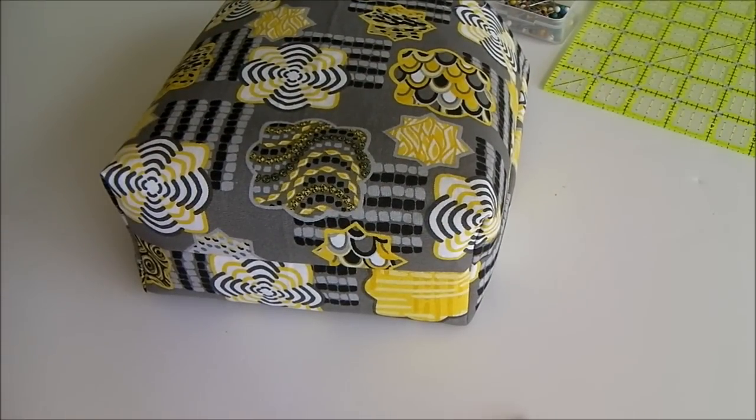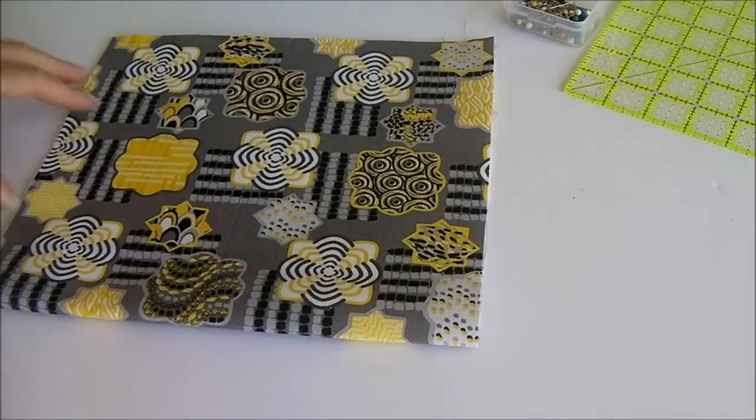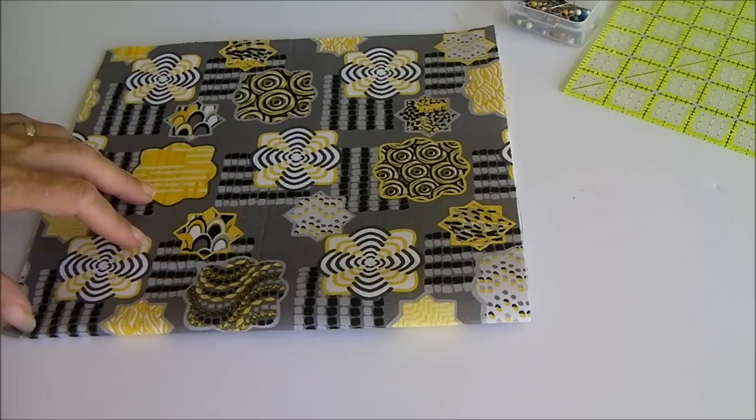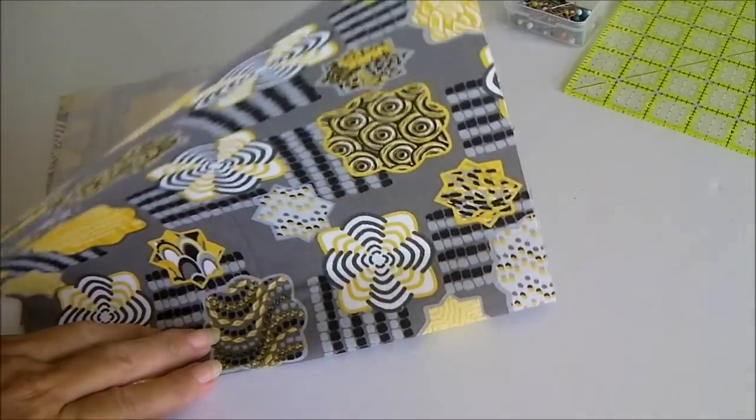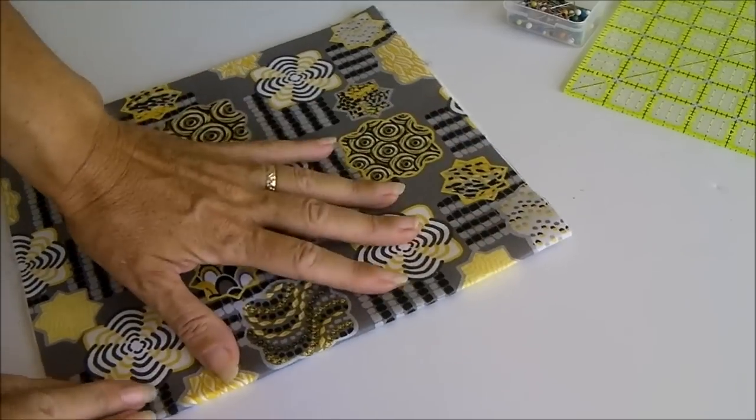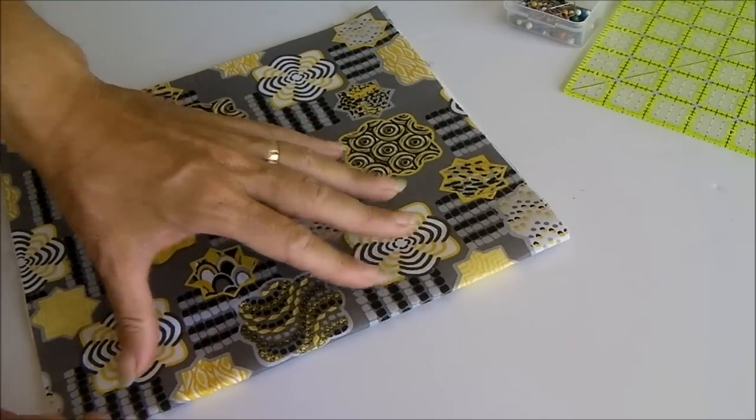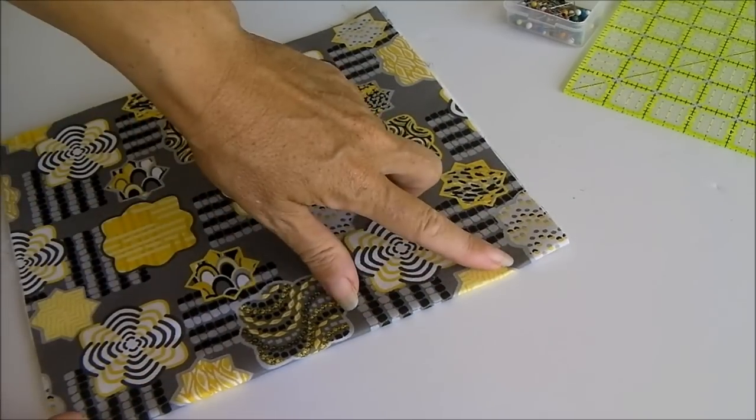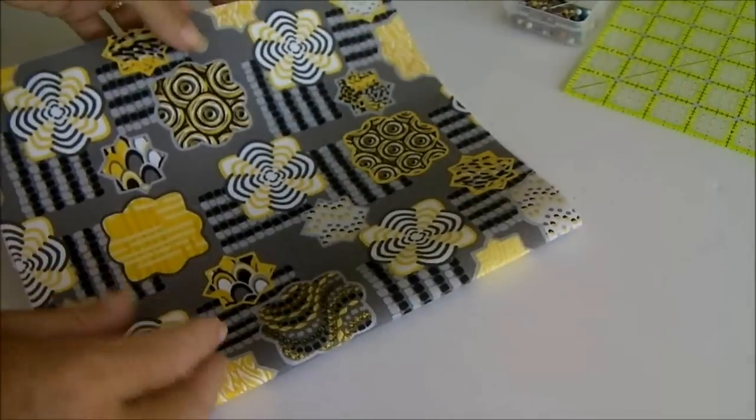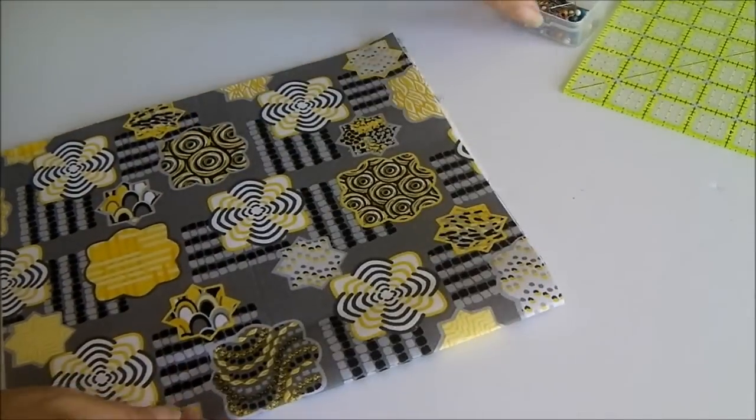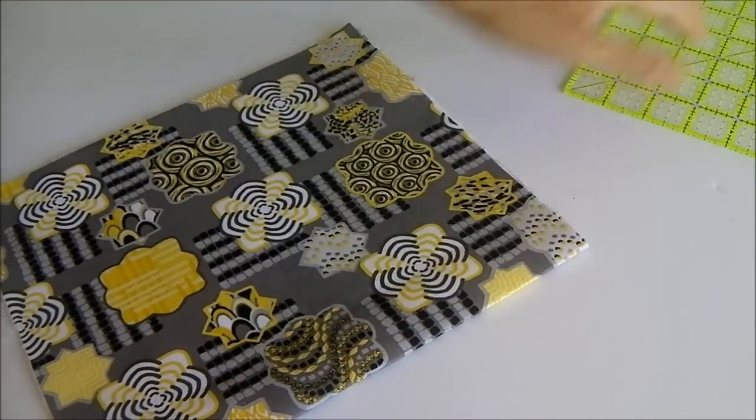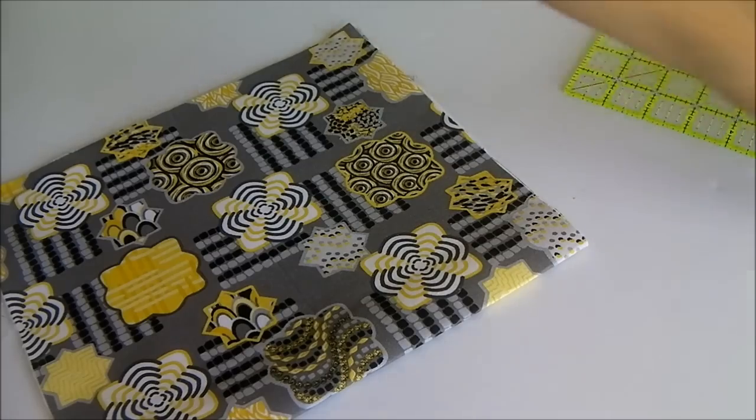So method number three is completely different and it's also going to give us a different look when we're finished so we'll start off with two pieces wrong sides together so the right side is facing out and this could already have been sewn across the bottom so if you have two pieces of fabric you will have already sewn your bottom seam first I'm just going to skip that for time.